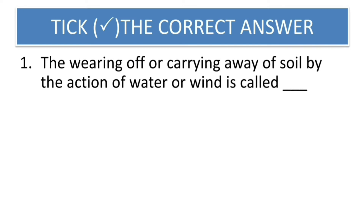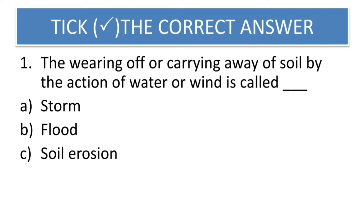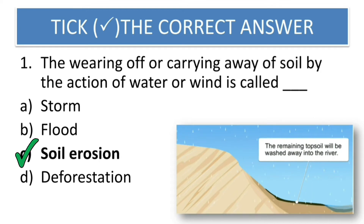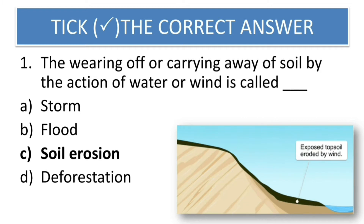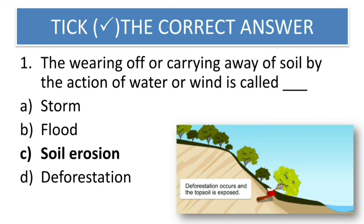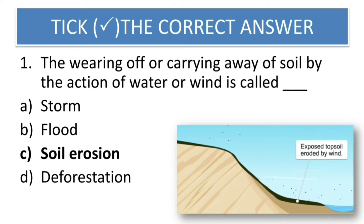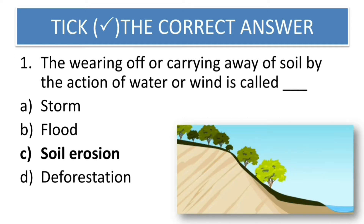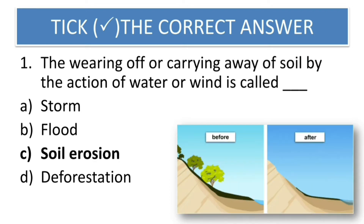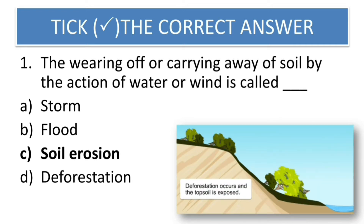First question from tick the correct answer: The wearing of or carrying away of soil by the action of water or wind is called — options are storm, flood, soil erosion, deforestation. The correct answer is soil erosion. When there are different calamities like flood, and there is a lot of water on the land, the good soil from the top of the ground gets washed away. This wearing of or carrying away of the soil by the action of water — it can be because of wind also. This is called soil erosion.